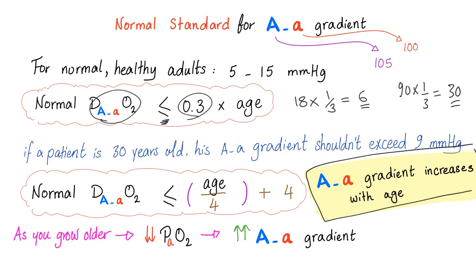No wonder the AA gradient increases with age, because your lung deteriorates as you age. If the AA gradient is normal, your lung is normal. But if your AA gradient is widened, your lung has a problem. As you grow older, your lung is deteriorating and therefore the AA gradient is widening — this is the normal aging effect.